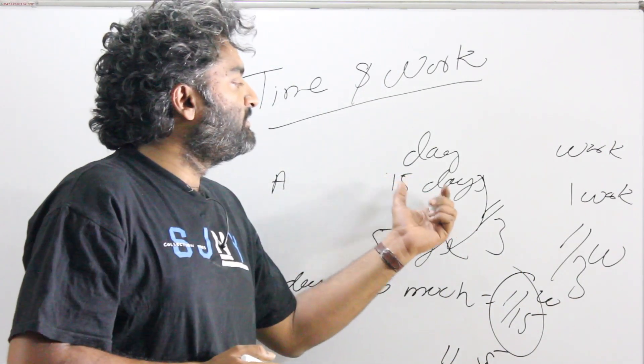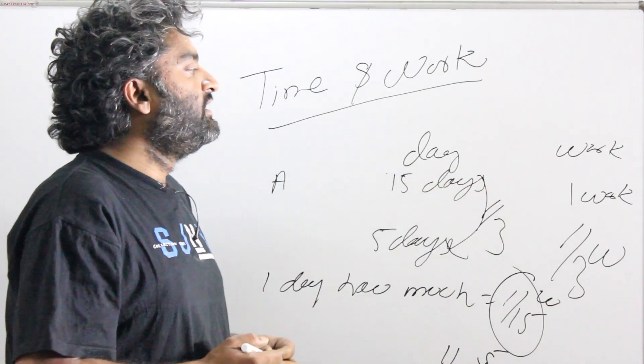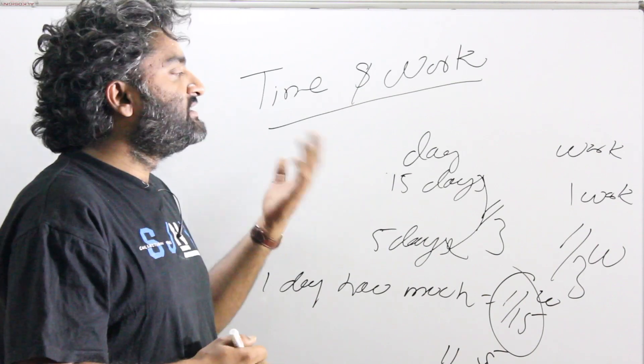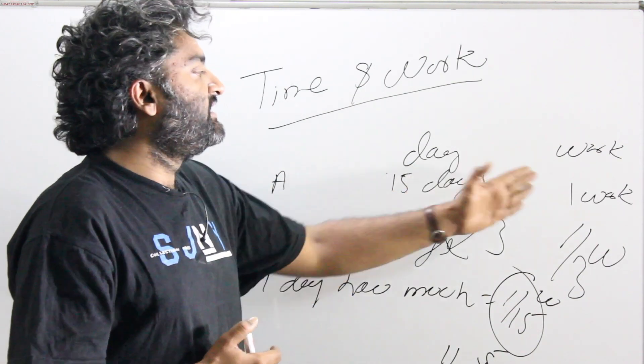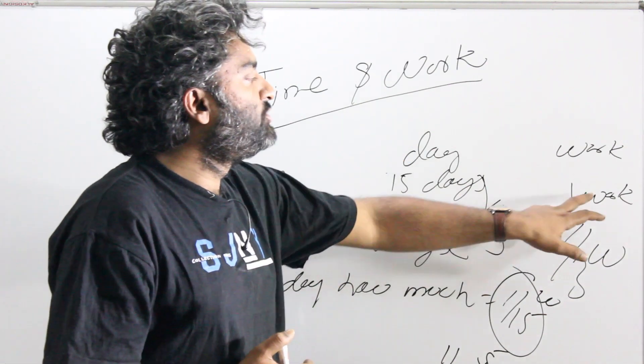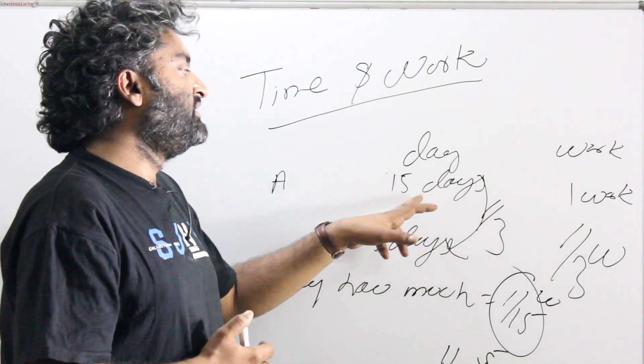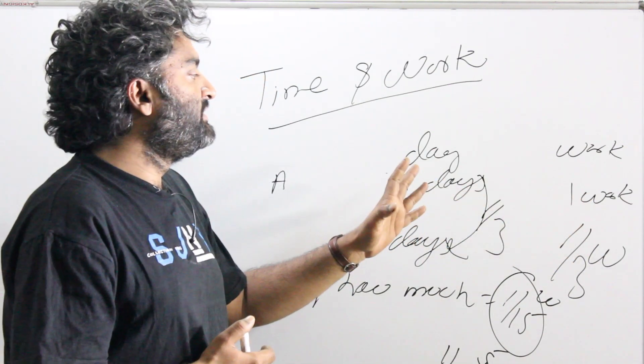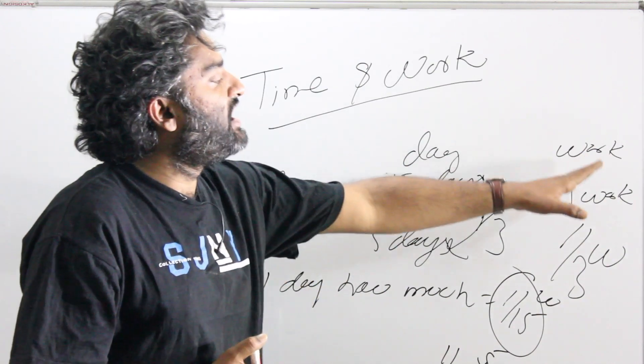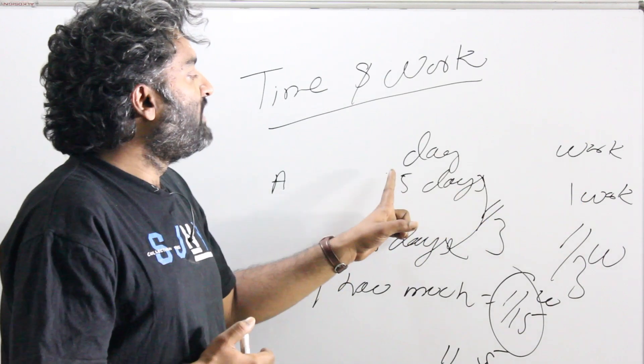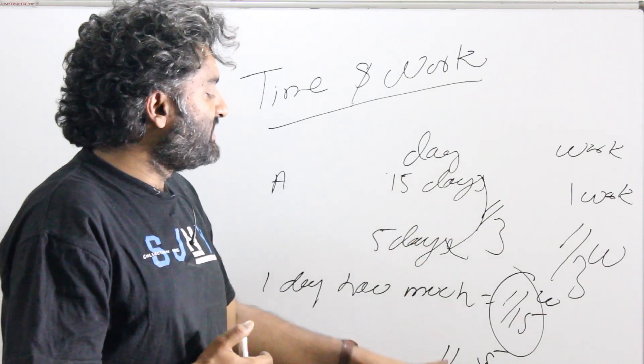Where did this 1 by 15 come from? This came from that the whole thing is getting done in 15 days. You can start thinking in other directions also. If the whole work is getting done in 15 days, if two work had to be done, it would take 30 days. One day, how much work is getting done? 1 by 15.